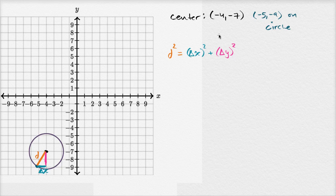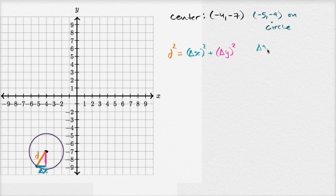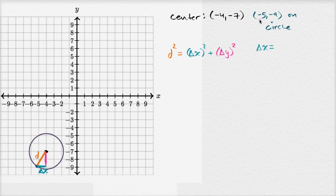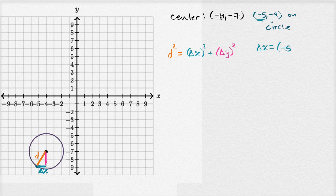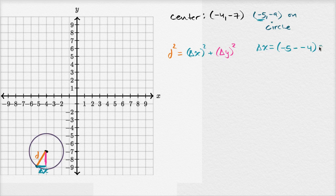Now what is our change in x? You could even eyeball it here, it looks like it's one, but let's verify it. We could view this point as the end, it doesn't matter which one you view as the start or the end, as long as you're consistent. So if we view this as the end, it'd be negative five minus negative four, and so this would be equal to negative one.